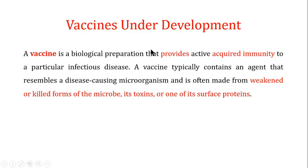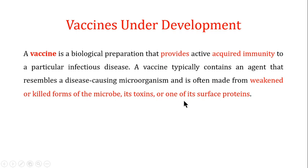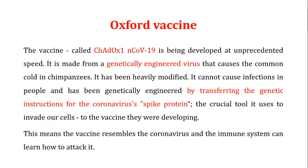Now let's talk about vaccines. A vaccine is a biological preparation that provides active acquired immunity to a particular infectious disease. A vaccine typically contains an agent that resembles a disease-causing microorganism, and is often made from the weakened or killed form of the microbe, its toxins, or one of its surface proteins.